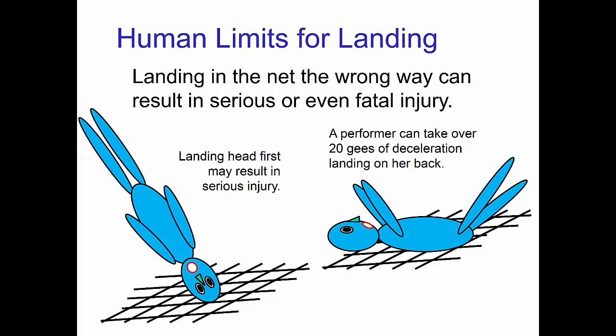Without the turn, the performer would land head first into the net, and this may cause serious injury. On the other hand, the human body can withstand very high decelerations, over 20 Gs, if the deceleration happens to be through the back, as opposed to vertically through the length of the body.